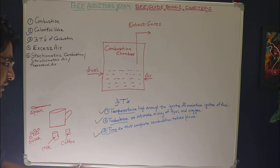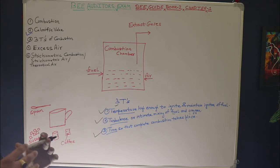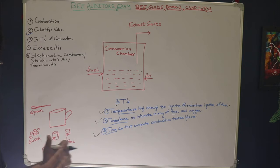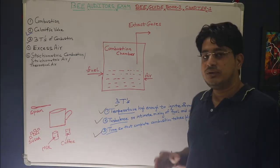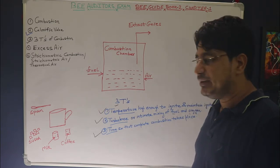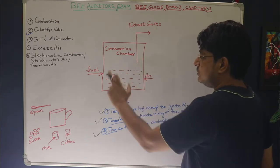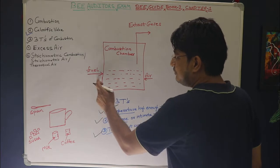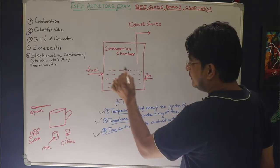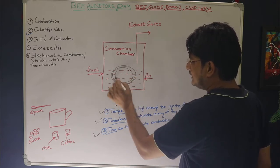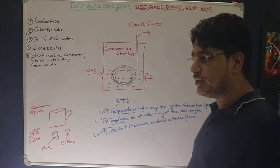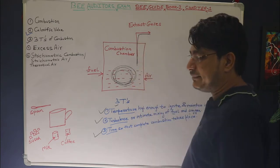So our second T — turbulence — is very important, as it is required for the mixing of fuel and oxygen. The third T is time: once the mixing of fuel and oxygen has started, sufficient time must be given so that the various reactions involved in combustion of the fuel take place. To explain the three T's, I will take the example of a combustion chamber where fuel and air are supplied, they interact, energy is released, and combustion products escape as exhaust gases.